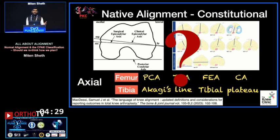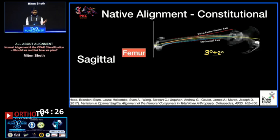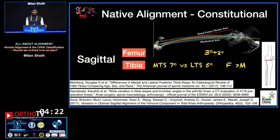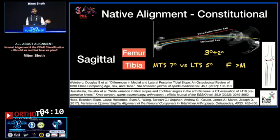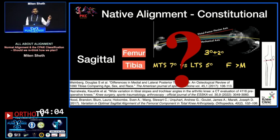How do you decide whether these torsions are worsening with arthritis and what the pre-arthritic torsion was? In the sagittal plane, the femur flexes three degrees to the mechanical axis. The tibia has a different slope on the medial side and a different slope on the lateral side. Females have higher slopes; Indians have higher slopes than Caucasians.